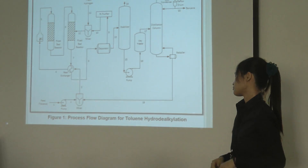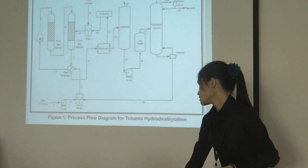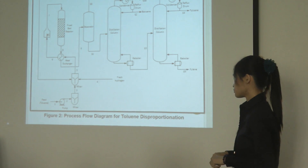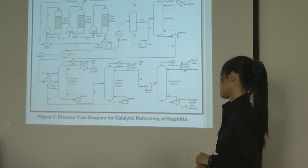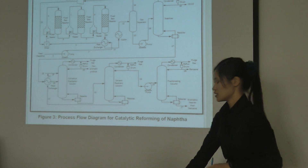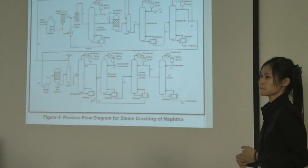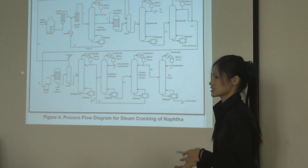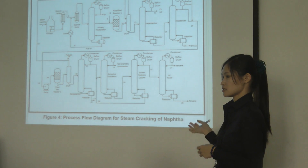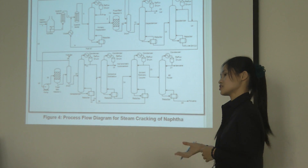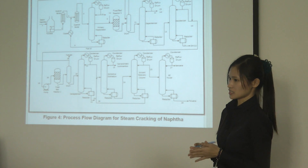This is the process flow diagram for toluene hydrodealkylation, and this is the process flow diagram for toluene disproportionation. This is the process flow diagram for catalytic reforming of naphtha, and this is the process flow diagram for steam cracking of naphtha. Once we have selected a desired process from the literature review, some modification could be done on the process chosen, based on the hierarchical approach stated in Douglas.